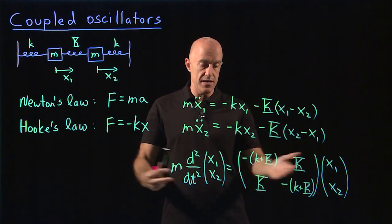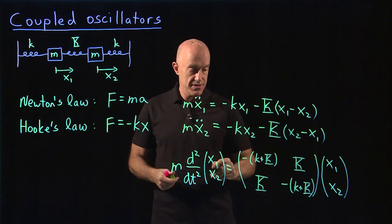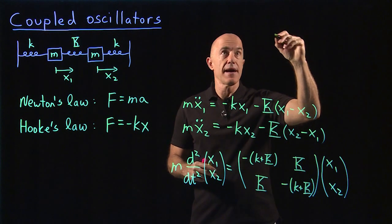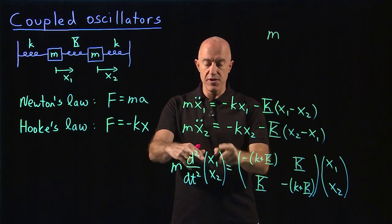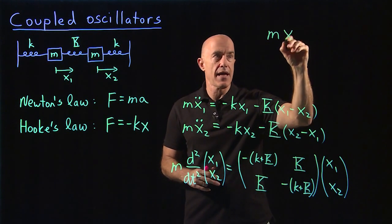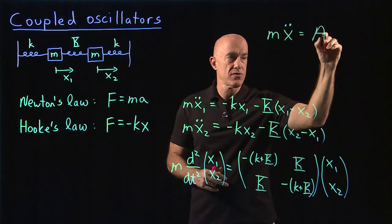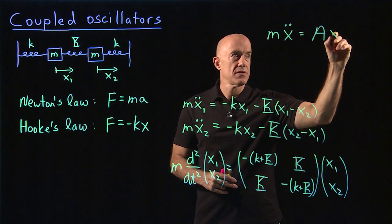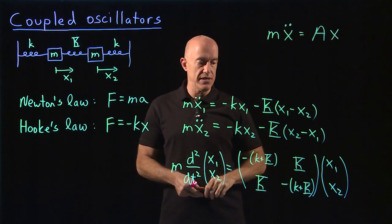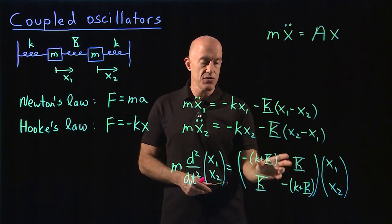We can simplify the notation. We could write this simply as M, and then if we define x to be this column vector, then it would be M x double dot. And that's equal to this 2 by 2 matrix A times x. And this will be the equation that we'll need to solve where the matrix A is given by this 2 by 2 matrix.